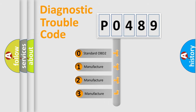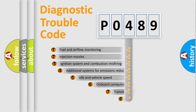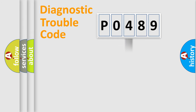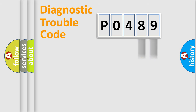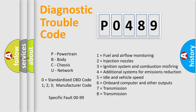If the second character is expressed as 0, it is a standardized error. In the case of numbers 1, 2, or 3, it is a manufacturer-specific error. The third character specifies a subset of errors. This distribution is valid only for the standardized DTC code. Only the last two characters define the specific fault of the group, and this division is valid only if the second character is expressed by the number 0.